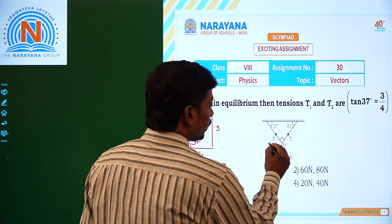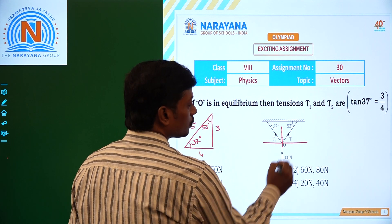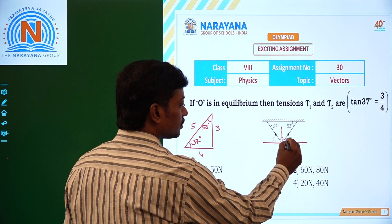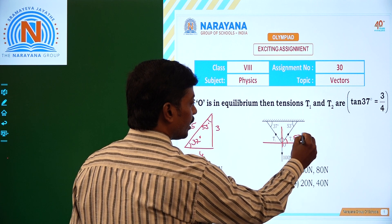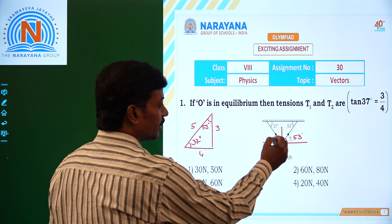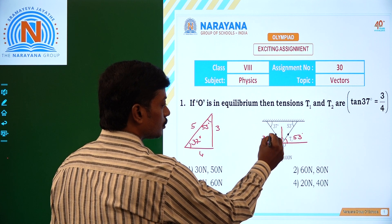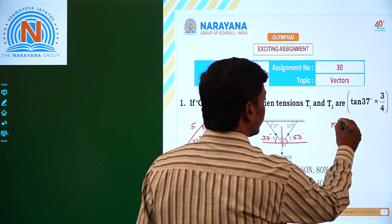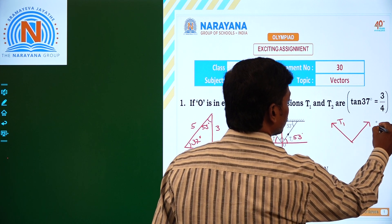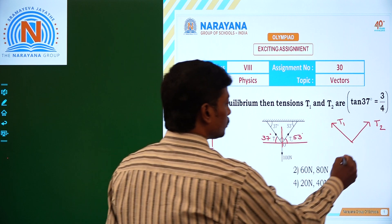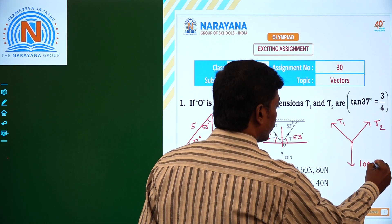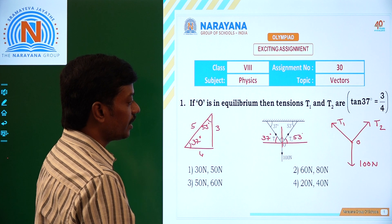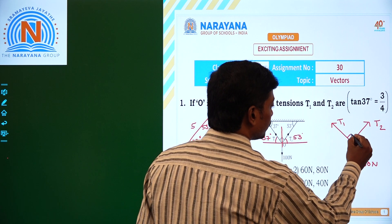So if we resolve T1 and T2 with the help of the point O, the angle is given as 53 degrees, so here we will also have the angle 53 degrees, and this is 37 degrees, so this is also 37 degrees. Now if we take the 3 vectors: one is the tension T1 in the first string, another one is the tension T2 in the second string, and the third one is the weight acting in the downward direction, that is 100 newtons, about the point O. The total angle between T1 and T2 is 90 degrees.